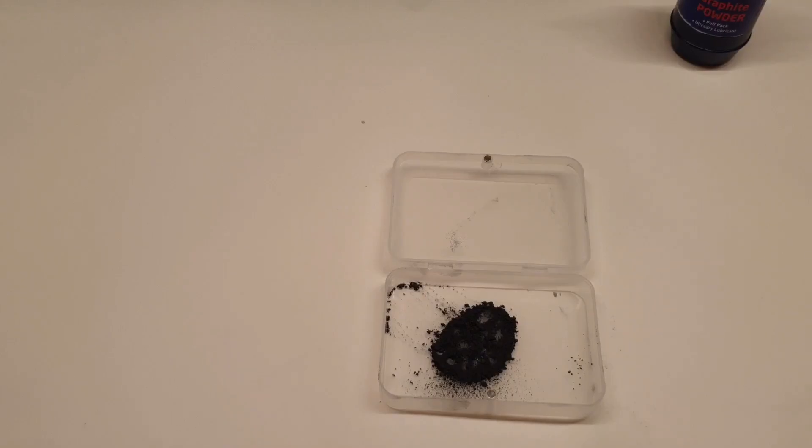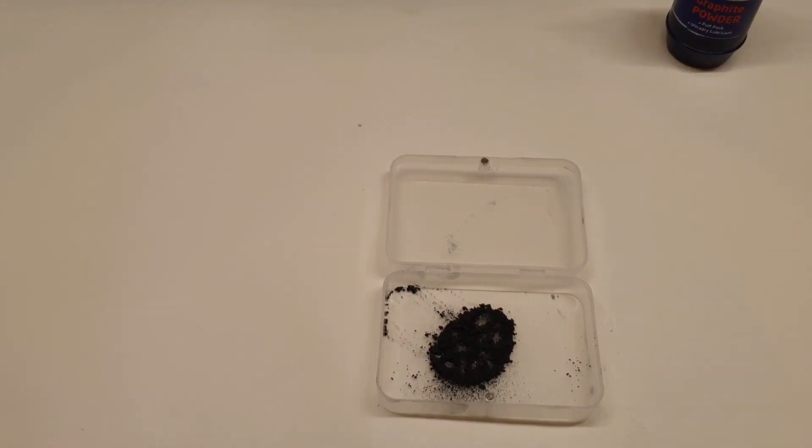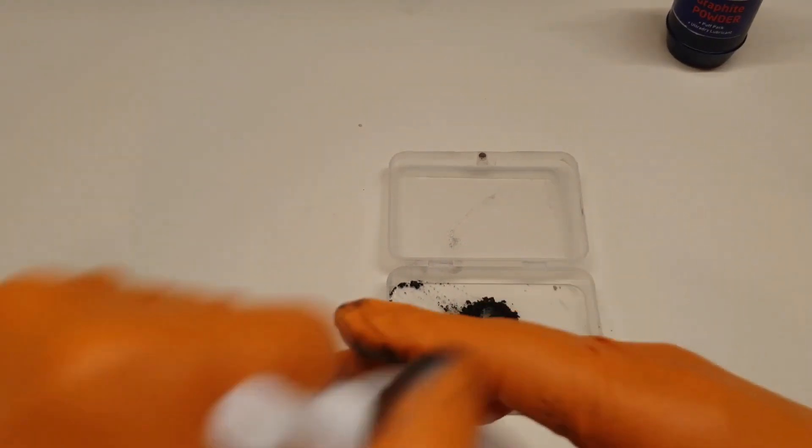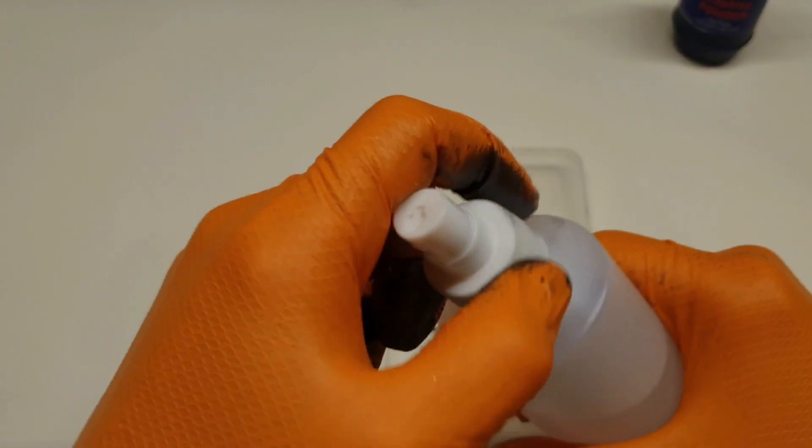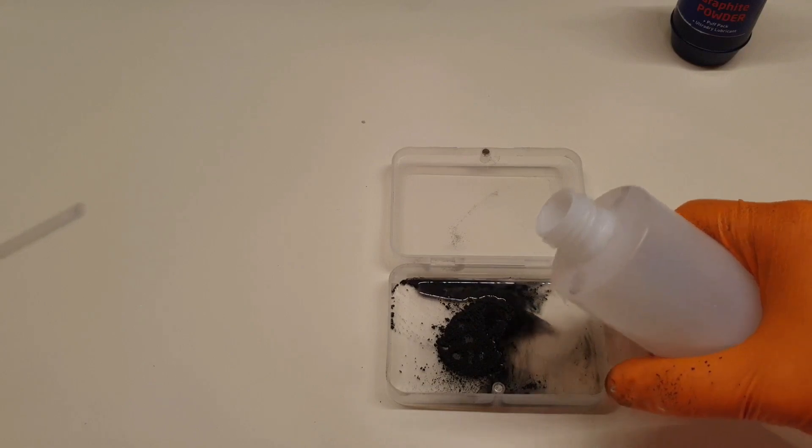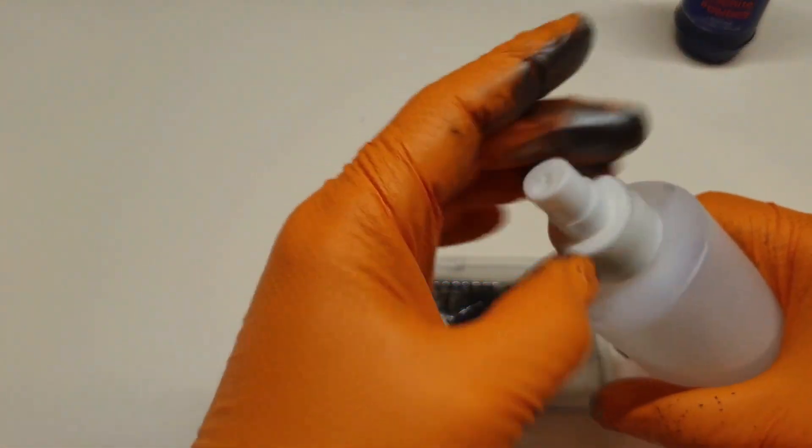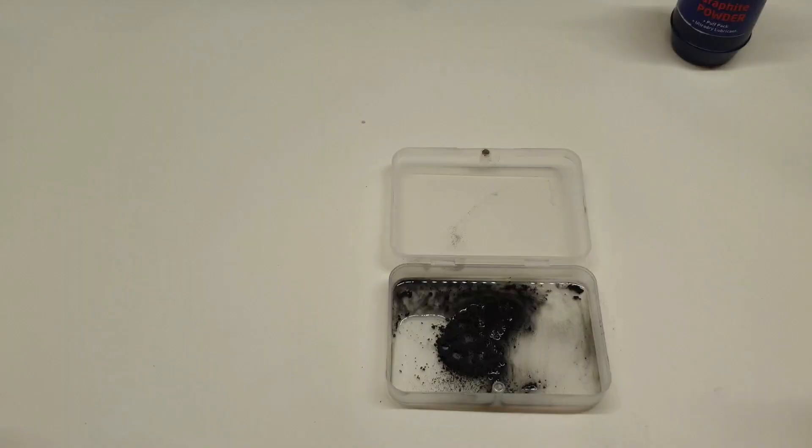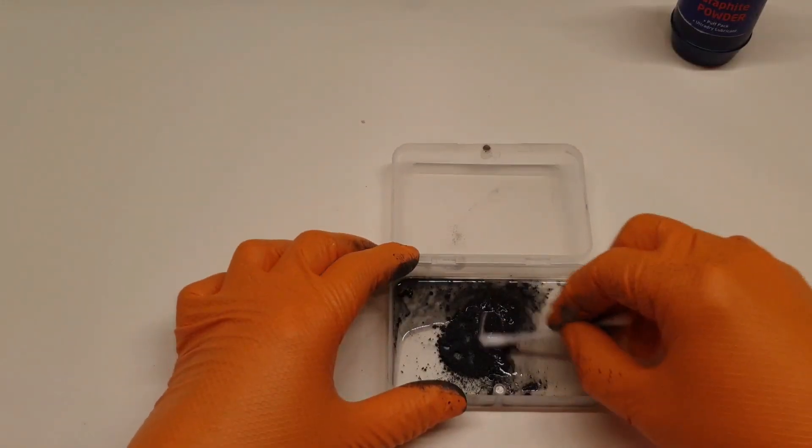The next method we'll use involves making a paste out of graphite powder and alcohol. When I say alcohol, a wide range of solvents can be used for this. It's very commonly used as isopropyl alcohol or acetone. I prefer to use ethanol or methylated spirits because they take slightly longer to evaporate.